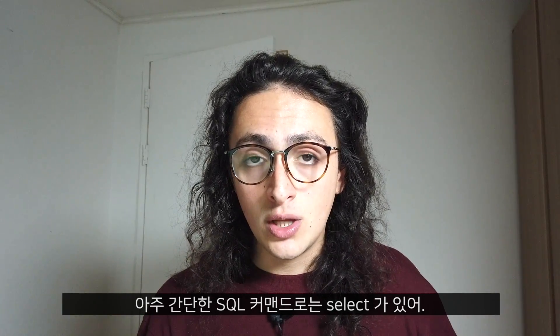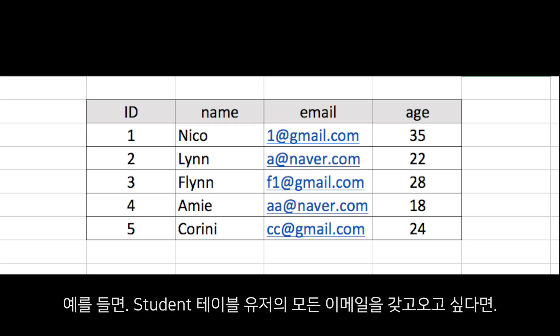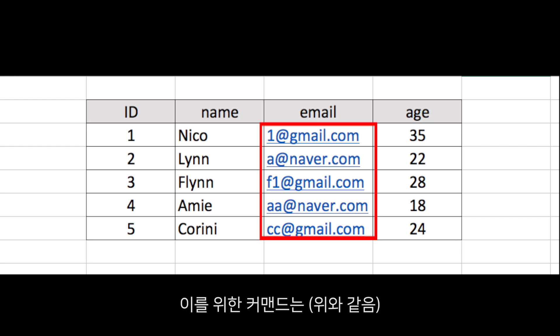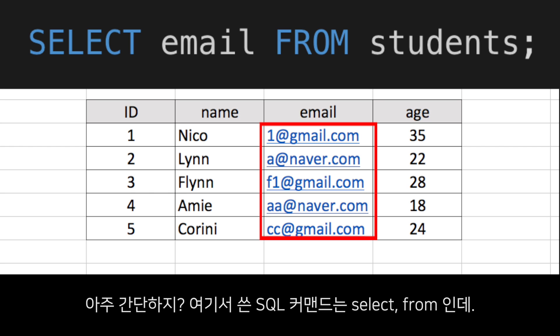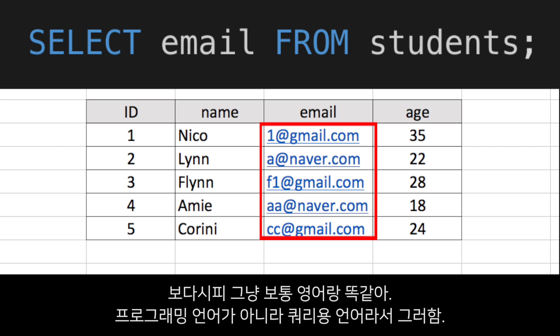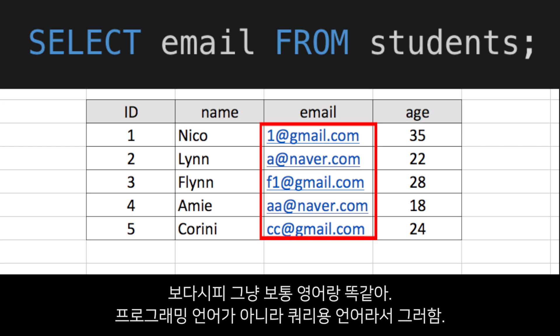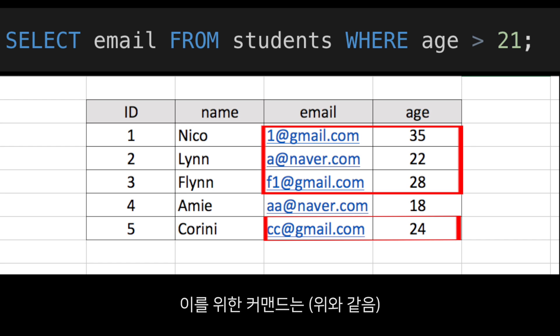Let's take a look at some basic SQL commands. If I want to get all the emails from the users in the table 'students', I write: SELECT email FROM students. As you can see, SELECT and FROM are SQL commands but they read much like English — this is a query language, not a programming language. Now let's get emails from users older than 21: SELECT email FROM students WHERE age > 21.